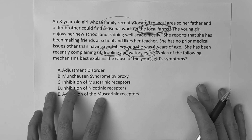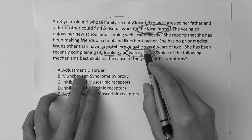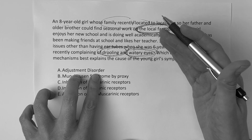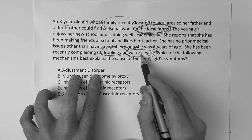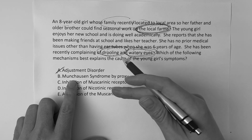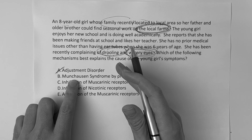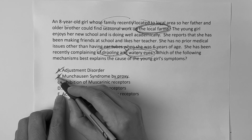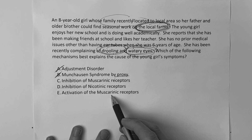Is there enough evidence to say adjustment disorder? There's no stressor — she says she enjoys school, and adjustment disorder requires a stress within three months and an exaggerated response. That also wouldn't explain drooling and watery eyes. Munchausen syndrome by proxy means caregivers in a position of power are making the child sick intentionally, but there's no evidence to support that here. So now we're down to inhibition of muscarinic receptors, inhibition of nicotinic receptors, or activation of muscarinic receptors.